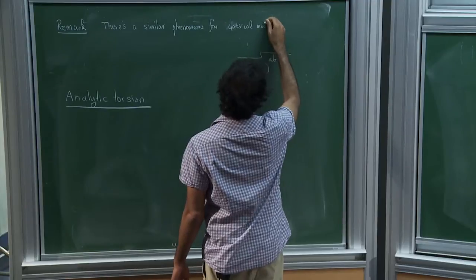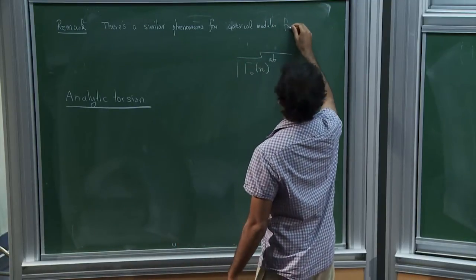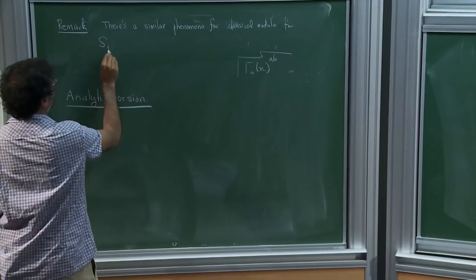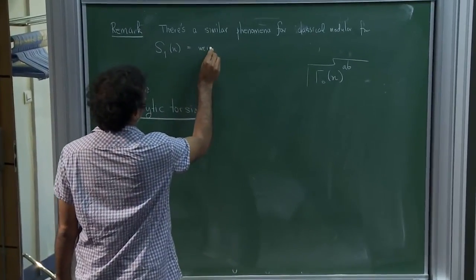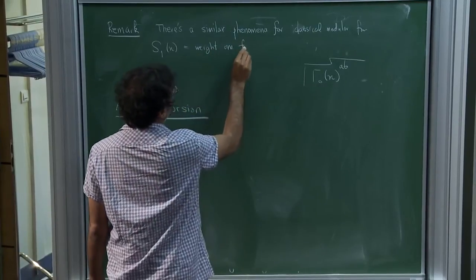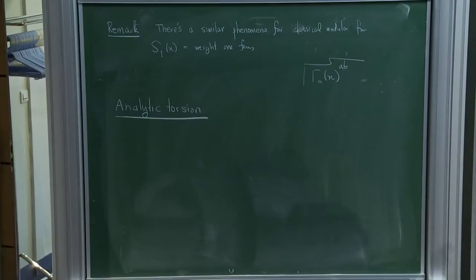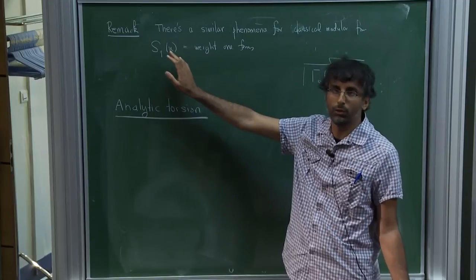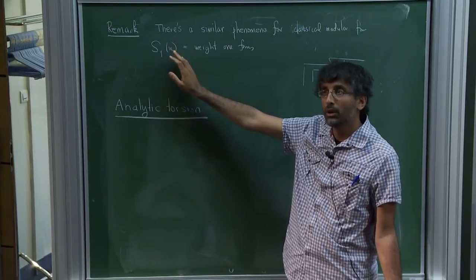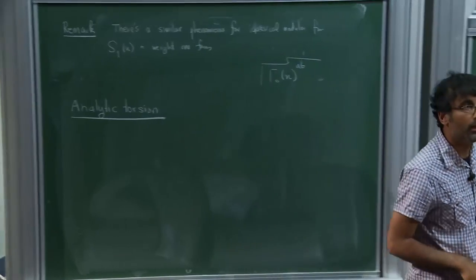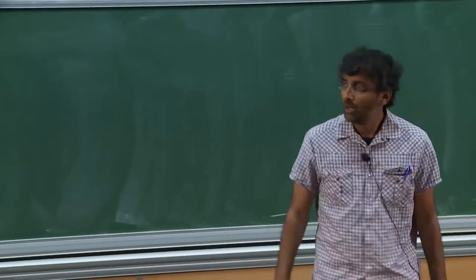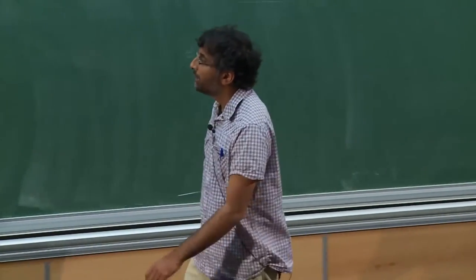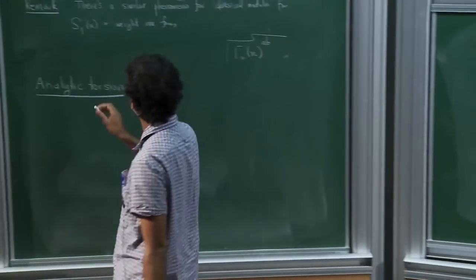It occurs for weight one forms. If you look at S₁(n), the space of weight one forms — weight one forms are in some ways the most interesting weight, because many things one thinks of don't work here. The simplest example is there's no dimension formula. The dimension is typically very small and it varies irregularly with n.